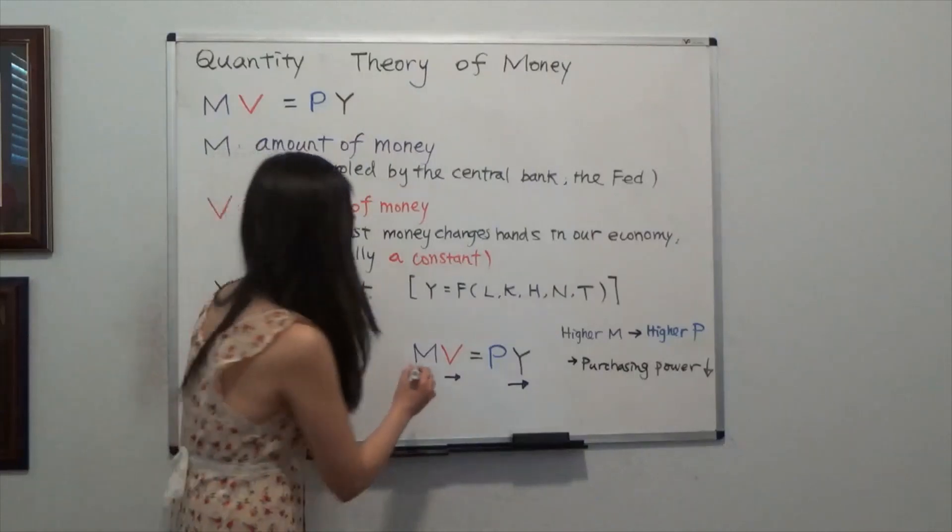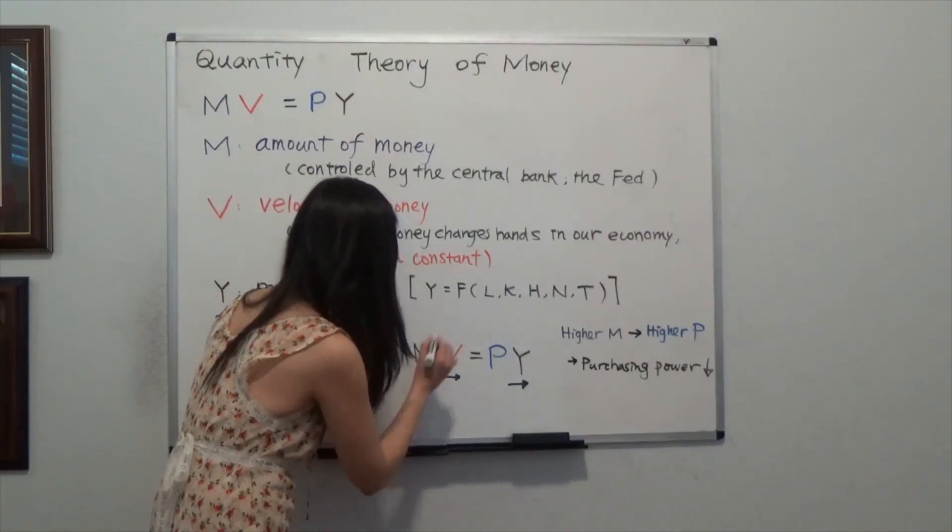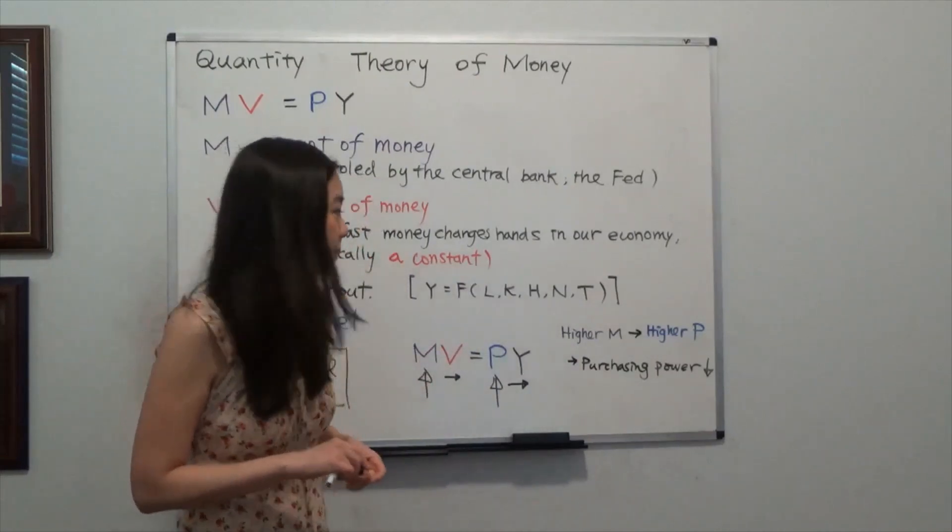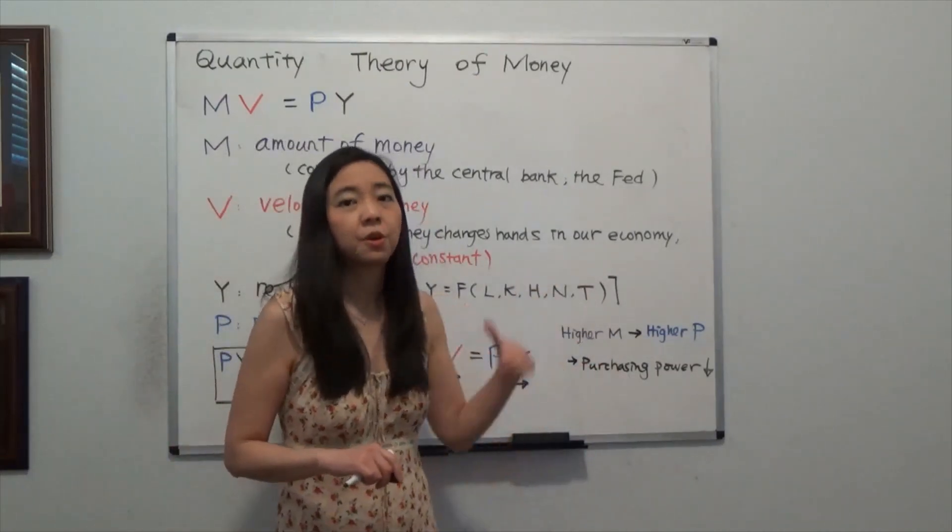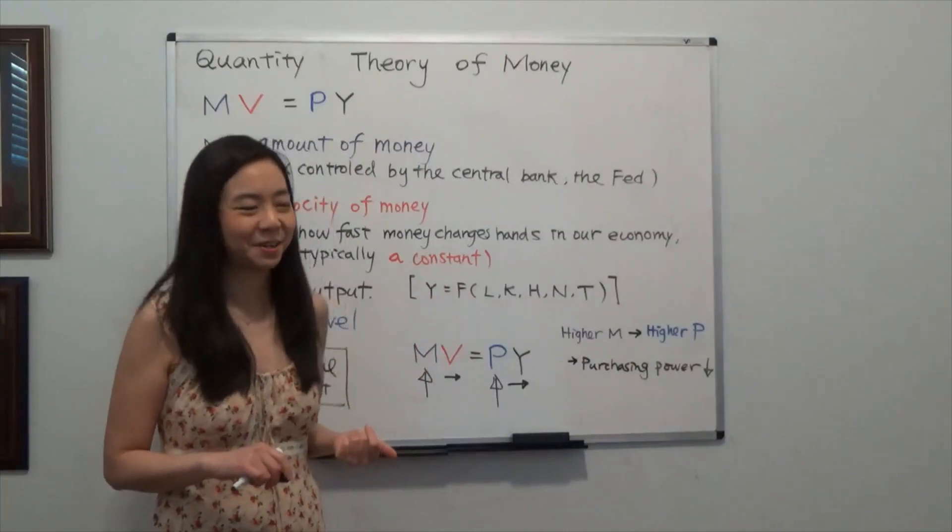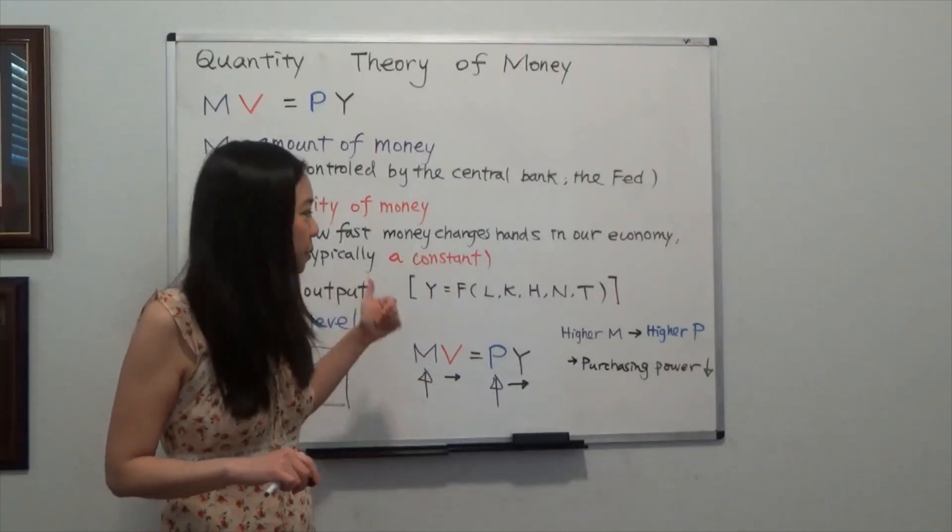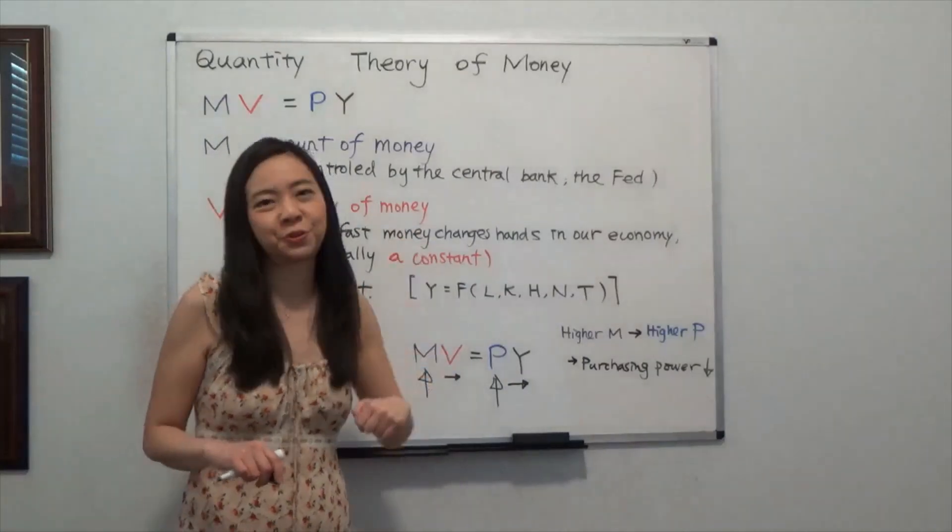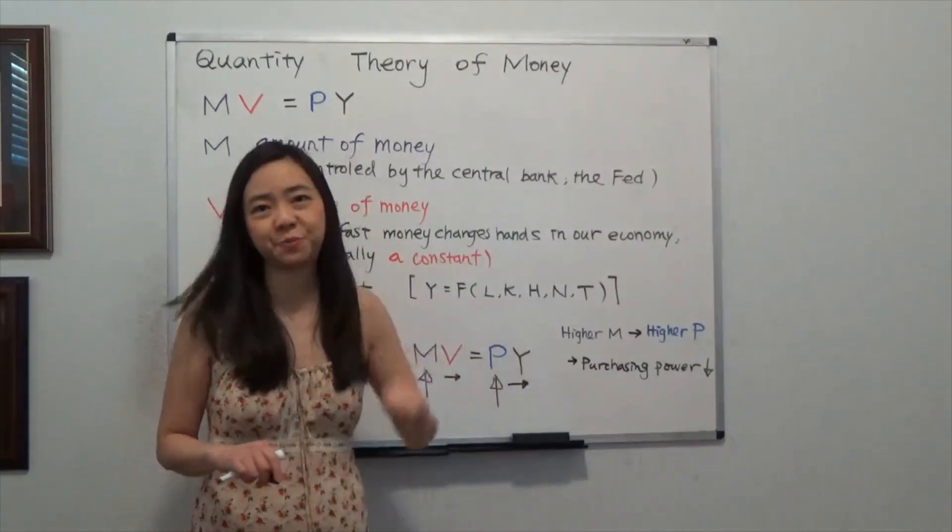So that means the more money you print, the higher the price level, meaning the purchasing power of money goes down when we have a large amount of money. So this tells you when the government prints more money, the value of money is going to go down because the purchasing power of money goes down.